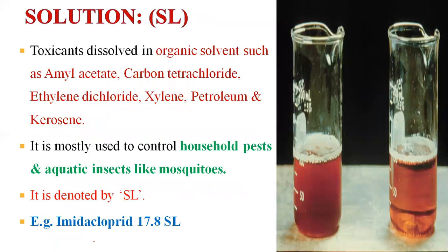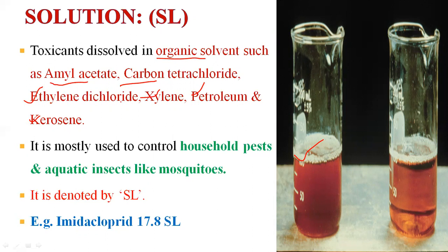Solution formulation, denoted SL: the toxicant is dissolved in organic solvents such as amyl acetate, carbon tetrachloride, ethylene dichloride, xylene, petroleum, and kerosene. It is mostly used to control household pests and aquatic insects like mosquitoes. It is denoted by SL. Example: imidacloprid 17.8% SL.